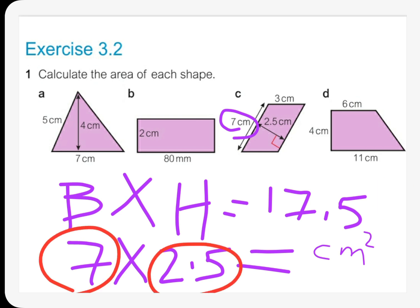So what did we do? We took the base, which is 7 here, and we multiplied it by the height, which is 2.5, and then we got 17.5 centimeters squared. This is the area of parallelogram. Now let's move on to question D and see how to get the area of a trapezoid.